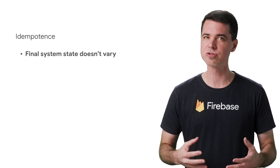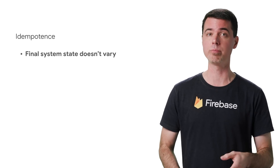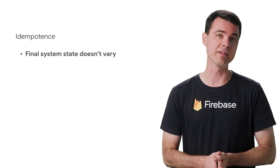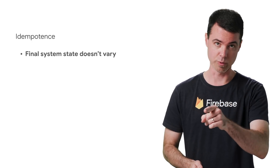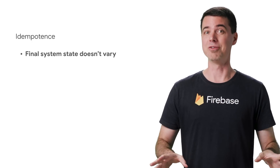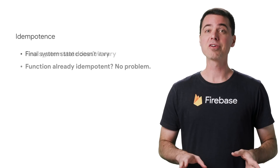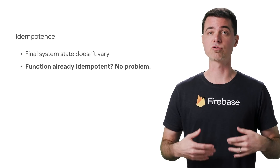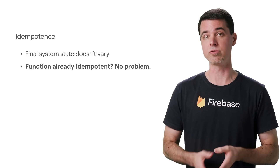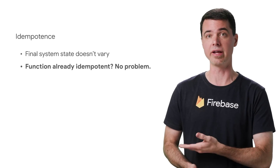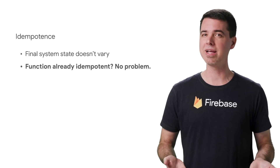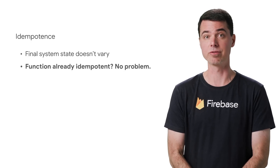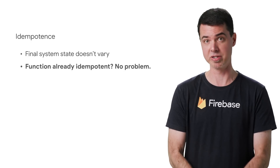Idempotence can be really tricky to work out, and a full discussion would be too long for this video. Your function might already be idempotent. For example, if all it's trying to do is write some constant or predictable value to a location in the database, writing that value repeatedly probably won't change the state of your system. That's something you'll have to think through carefully for your particular case.